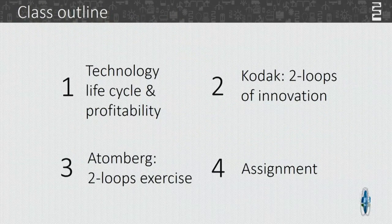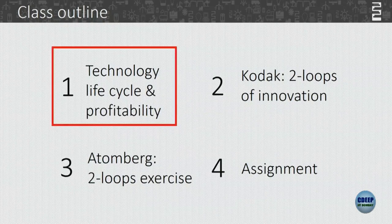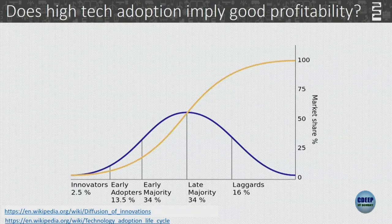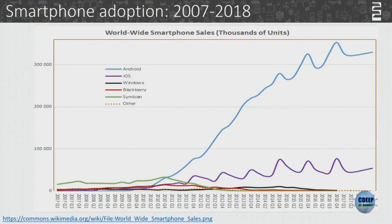Let me give an example of how the technology life cycle relates to profitability. Does high technology adoption imply good profit? Let's say machine learning — it has a lot of adoption and you start a company in it. Does that mean it's likely to have good profits? Smartphone adoption after 2007 zoomed really, really high.